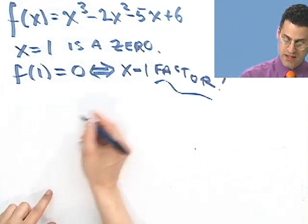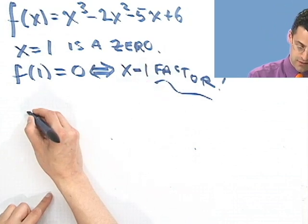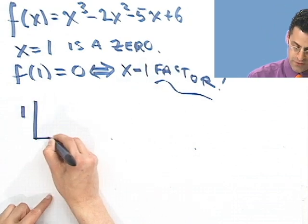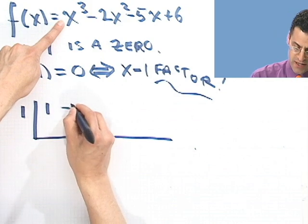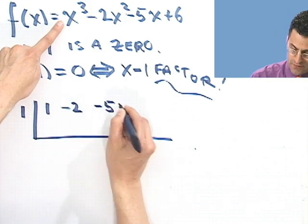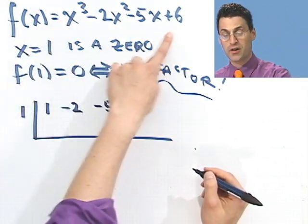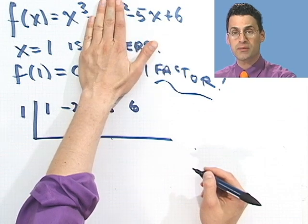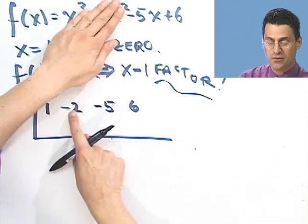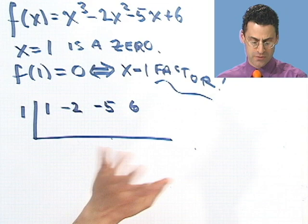So let's now do a synthetic division. I flip the sign, 1, make a house, write down the coefficients, 1 minus 2 minus 5, 6. Don't forget to write down all the coefficients. If there wasn't an x squared term in there, we'd put a placeholder of 0 right in here. But since there is one, we don't have to worry about it.